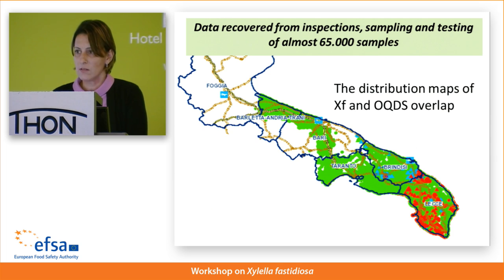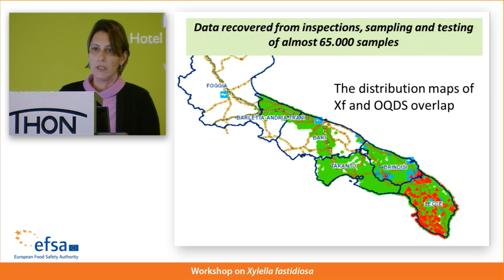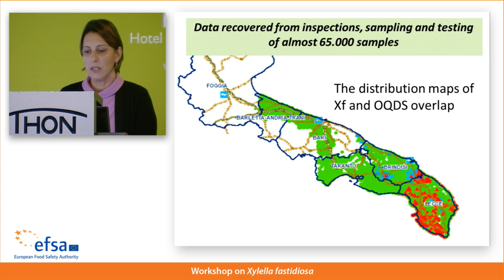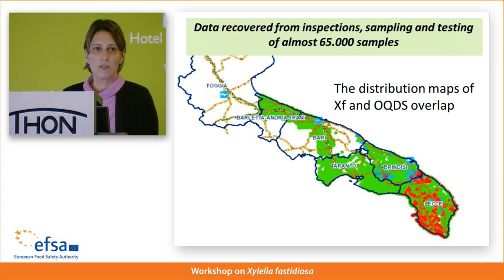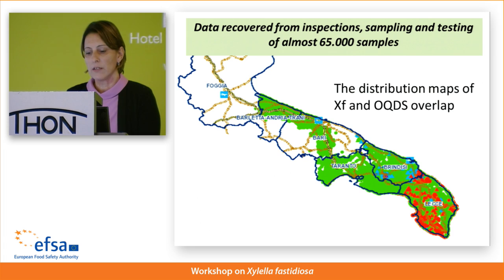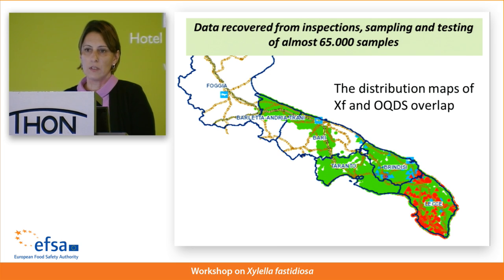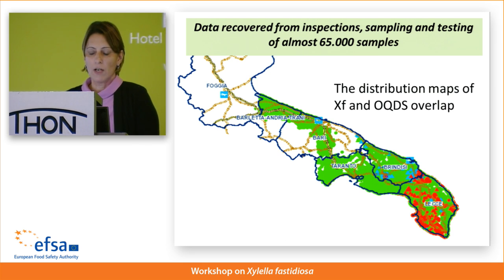An in-depth monitoring has been enforced in the demarcated area. Results from visual inspection and laboratory tests show that more than 50,000 samples have been tested in the region. The green color indicates areas free from Xylella, the red indicates positives. What becomes clear is that the distribution of Xylella overlaps with the distribution of the Olive Quick Decline disease.